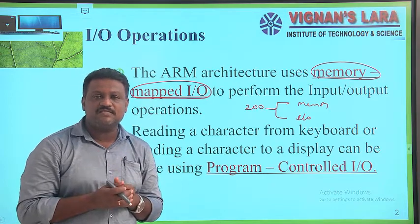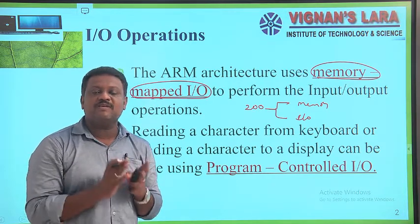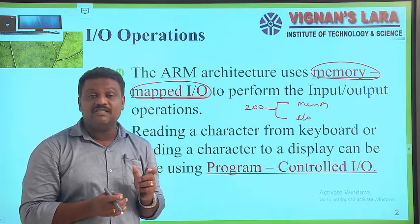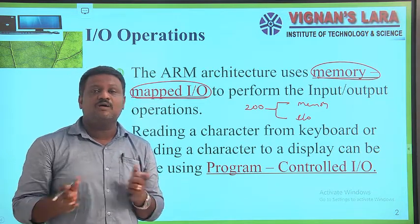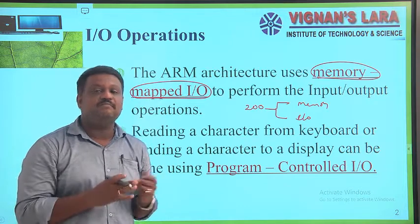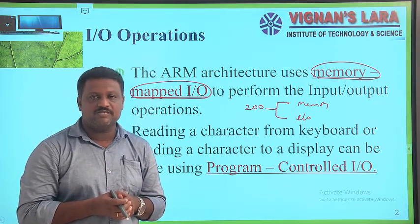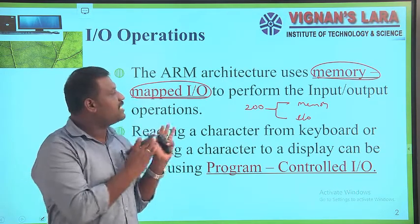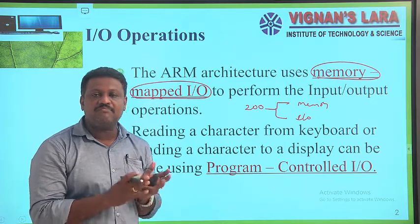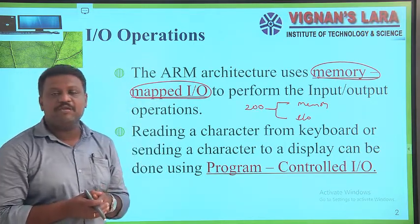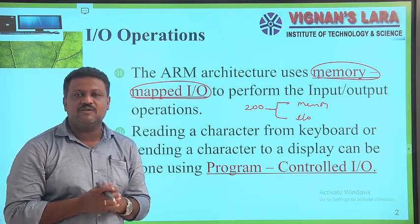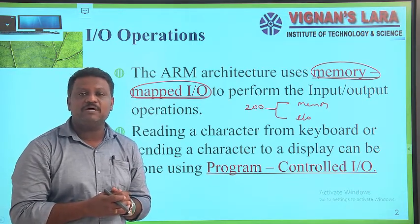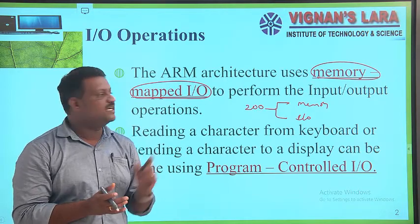The problem with memory-mapped I/O is that the available address space is shared by both memory and I/O devices, so only a limited number of addresses are assigned to memory and a limited number to I/O devices. But regardless, in ARM architecture, memory-mapped I/O is used to perform input and output operations, meaning I/O devices in ARM processors are addressed using the memory-mapped I/O concept.